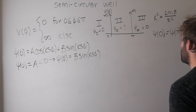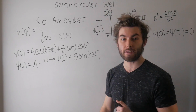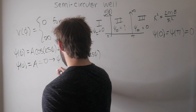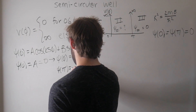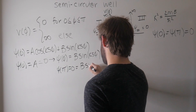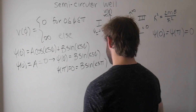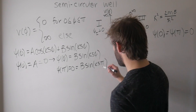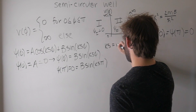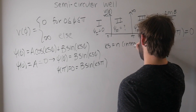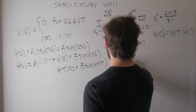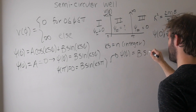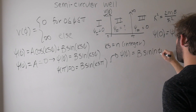Now we apply the second boundary condition. The second boundary condition doesn't fix what B has to be — it fixes what this combination ks has to be. We're saying psi of pi equals zero, which equals B sine of ks pi. This argument makes the sine zero if ks is some integer, so we say ks equals n. So now we have psi of phi equals B times sine of n phi.